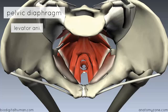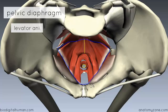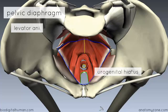It has its anterior attachment on the posterior surface of the pubis, and then it attaches along the fascia of the obturator internus muscle. At the back, it attaches to the coccyx and meets in the midline to form this midline raphe, posterior to the anus, which is this aperture here. Anteriorly, you can see that the levator ani muscle has this U-shaped defect called the urogenital hiatus, which allows the urogenital apparatus to pass through the pelvic floor into the perineum below.